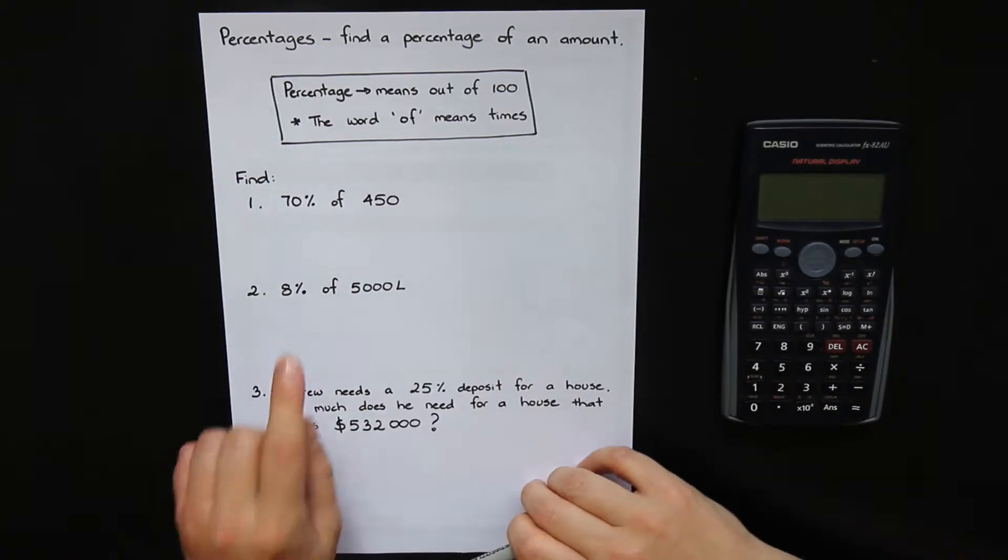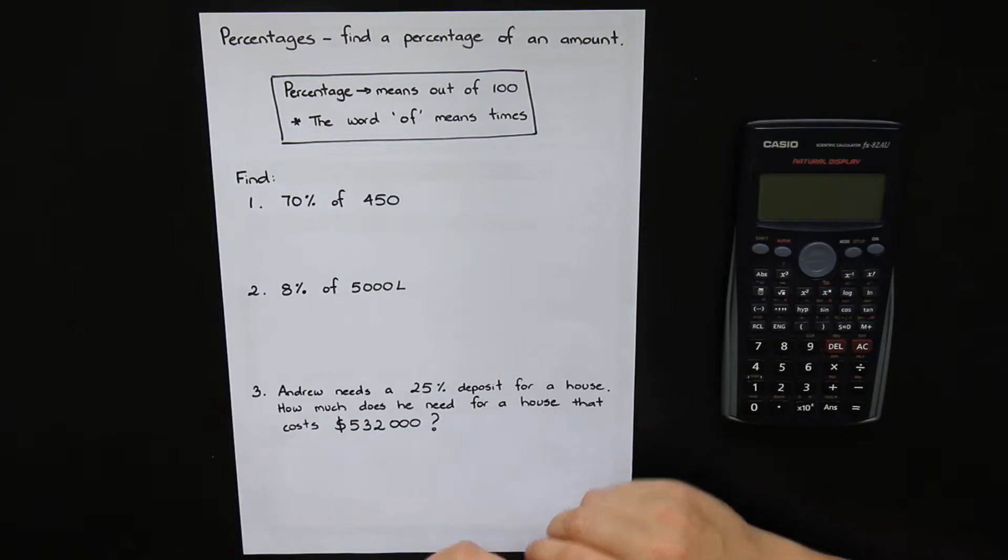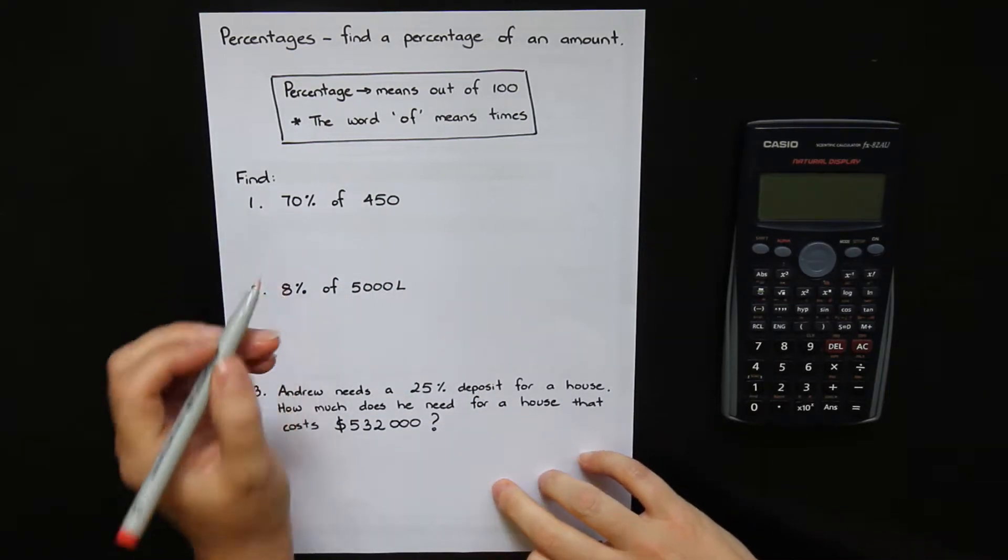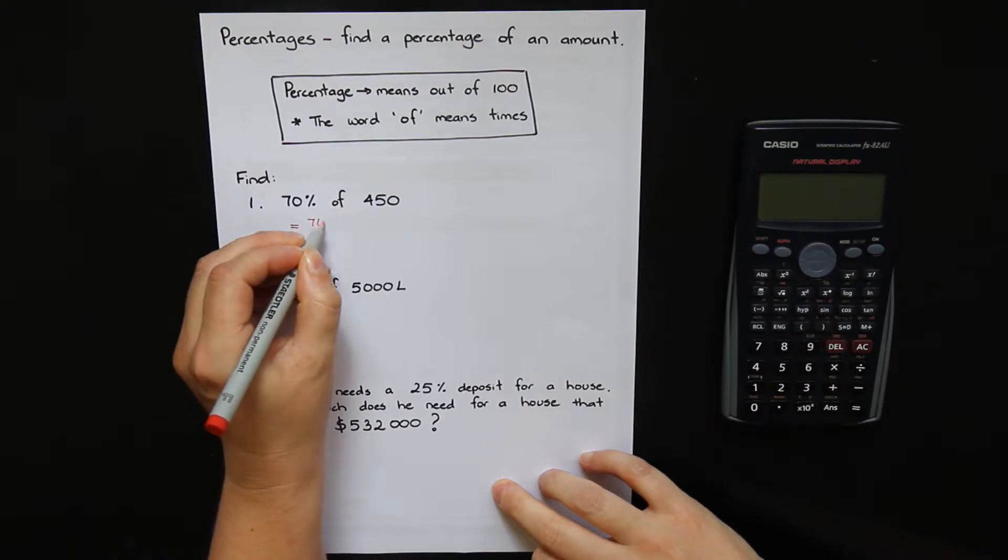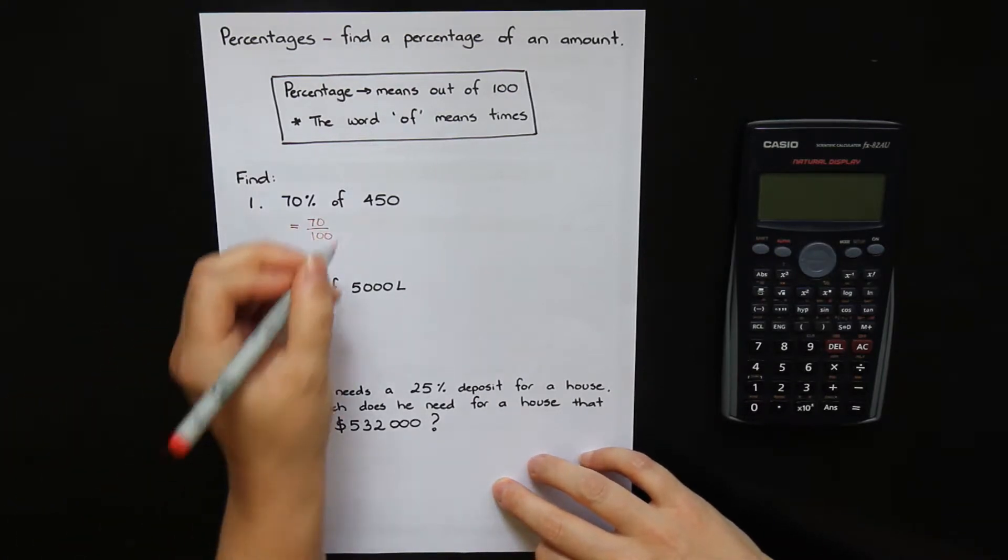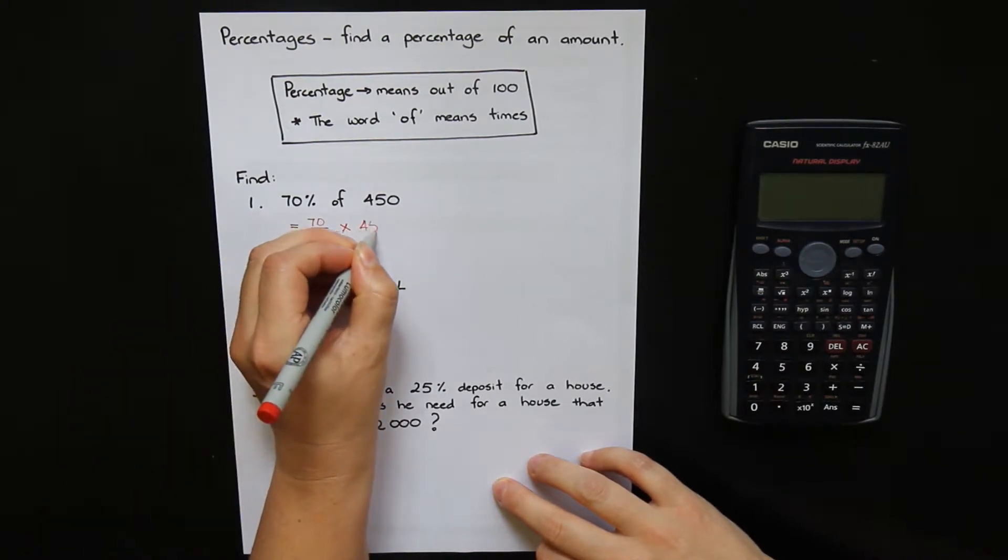So if I want to find 70% of 450, 70%, a percent means out of 100. So I can write that as 70 out of 100 of means times by 450.